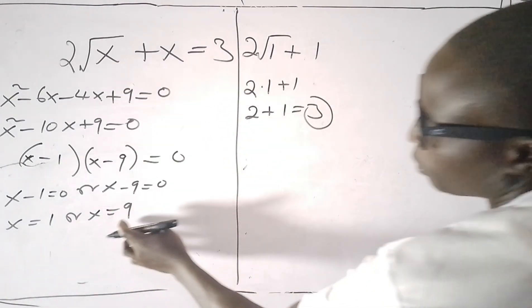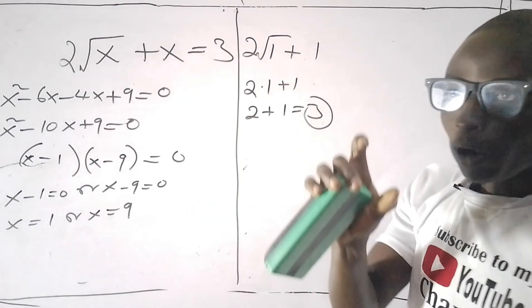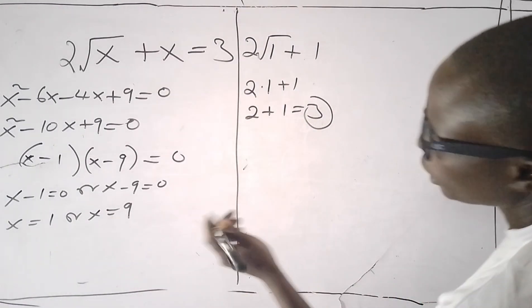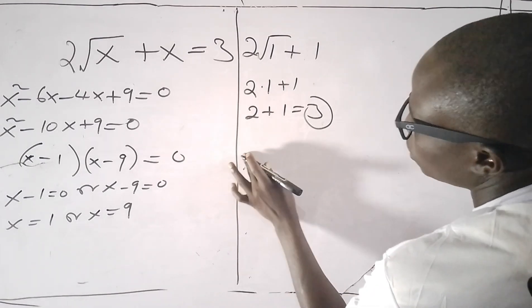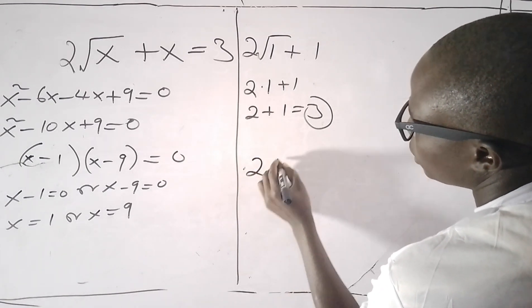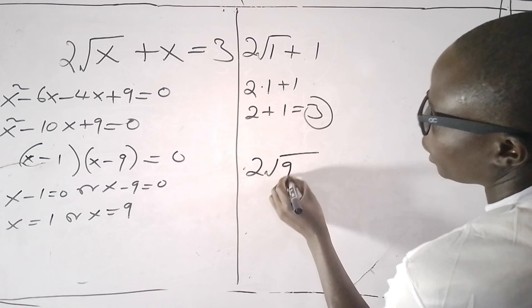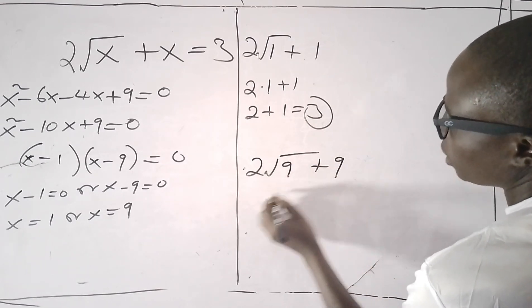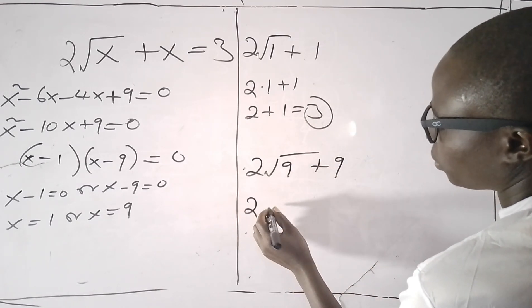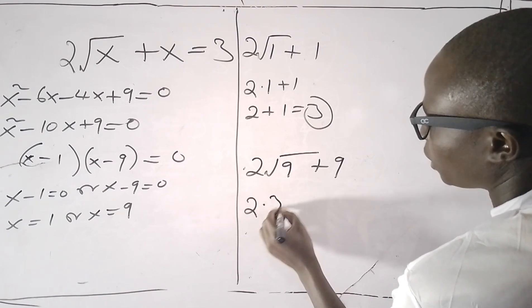Let's try and fix 9, because sometimes the two values can satisfy a particular equation. So 2√9 plus 9.